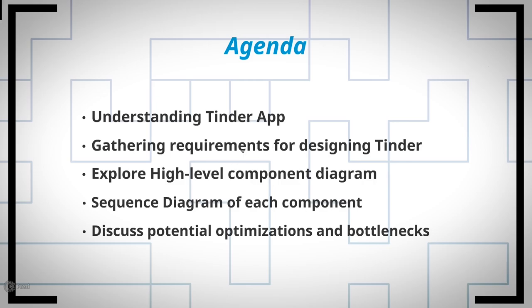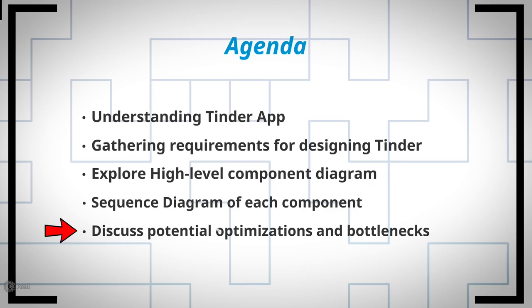We highly appreciate your feedback on these videos — it helps us improve quality and bring the best content. After dissecting the requirements, we will look into the component design, where we use a sequence diagram to show interaction between different components and where to pay extra attention in terms of availability or scaling. We will also reserve four to five minutes at the end to go over optimizations and extensions, which is the most important part of a system design interview — it shows your creativity and awareness of available technologies.